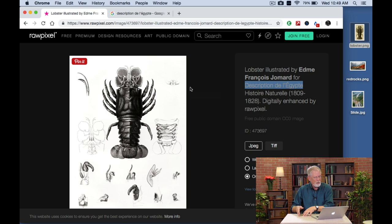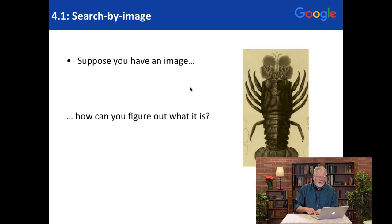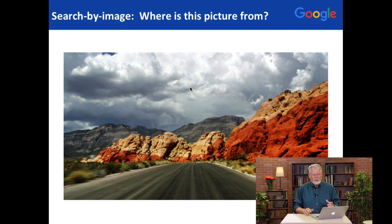So that's how to search by image for an image that's on your desktop. Now let's try something else. We found out how to discover the image and the source of that image. But now this is a photograph of some beautiful red rock country somewhere in the world. Where exactly is this? So what we can do with search by image is kind of the same thing — search for this image and hopefully get some surrounding data that says exactly where it is.